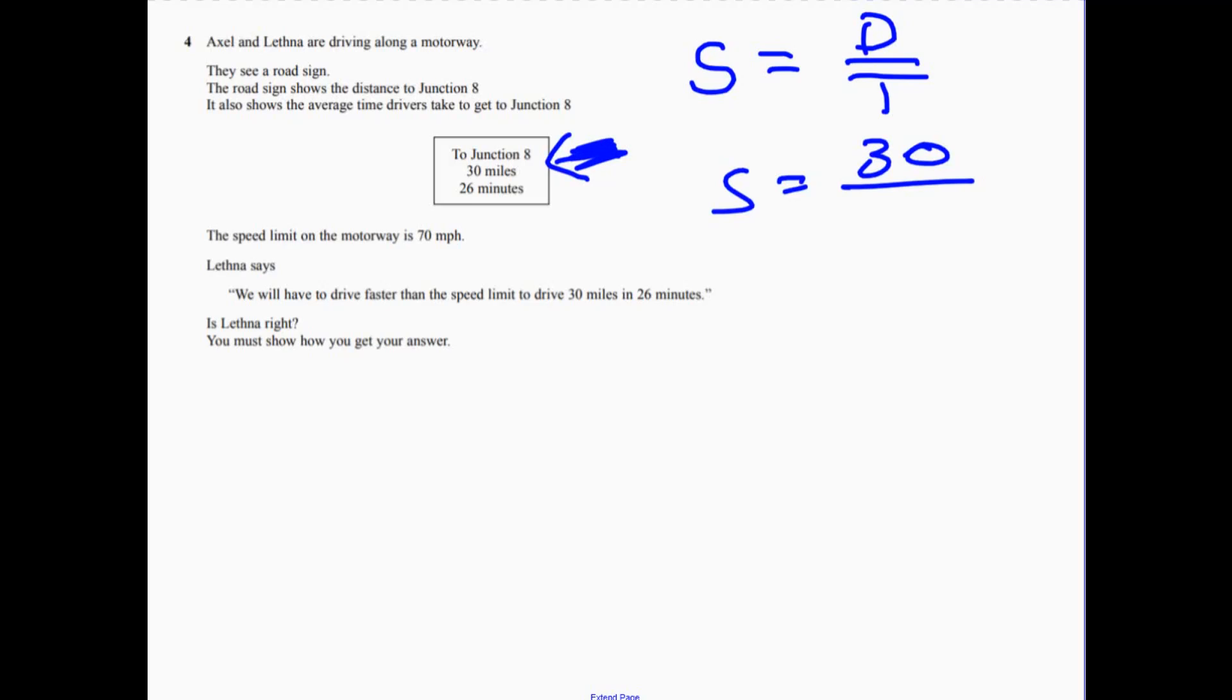Now, the problem is 26 minutes because this is 30 miles. We're going to work out the speed in miles per hour. So the problem is the 26. We need to get that. Remember, time isn't decimal. So 26 over 60 - that will give you the time in hours. Remember, this is minutes. The hardest thing about speed distance time calculations is converting the time into decimal, remembering to do that.